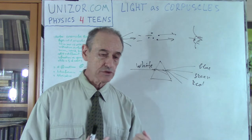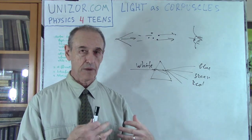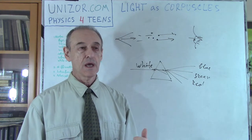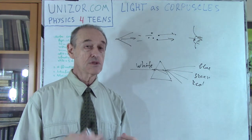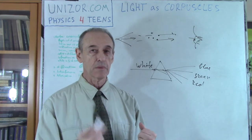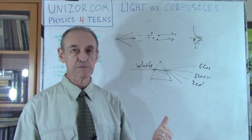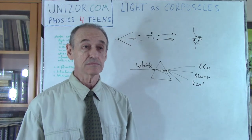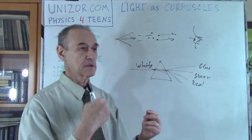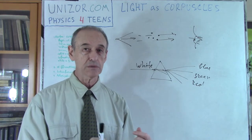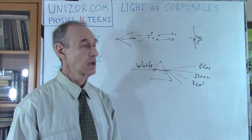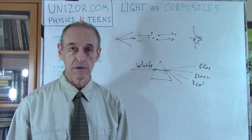Now I would like to devote some time to explain why this model is really insufficient. There are certain things about light — known at or near the time of Newton — which the corpuscular theory cannot really explain, making it insufficient. I will now talk about certain things we observe with light which just cannot be explained using the corpuscular theory.